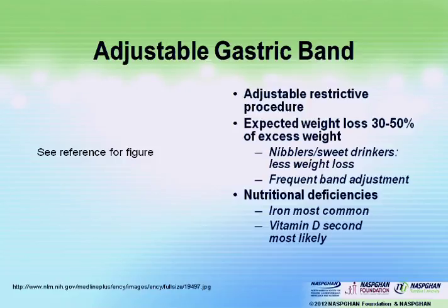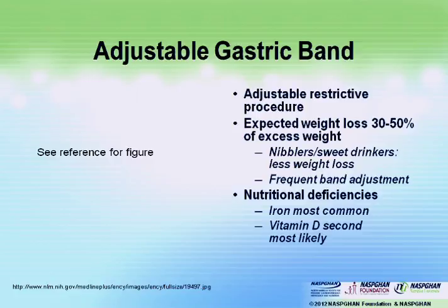I'll focus on each procedure, discussing weight loss outcomes, issues, and commonly seen deficiencies. With the band, weight loss is about 30% to 50% of excess weight. The goal is restriction so you're getting that ghrelin feedback — you feel full quicker. But if you're a snacker who never distends all at once, or a nibbler who drinks sweet drinks, the band may only achieve 10 or 20% excess weight loss. The key with this is that you have to adjust the restriction — like Goldilocks, giving just enough so they feel bad when they try to eat too much, but not so tight you're restricting the esophagus.